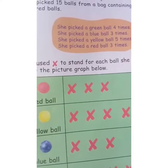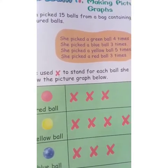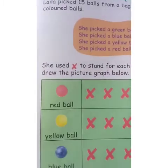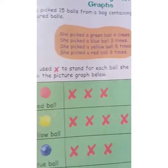First of all, you have been told to read a picture graph — you have columns with pictures and you know how much of something belongs to someone. But now you are going to learn to make your own picture graph. Look at page 229: Laila picked 15 balls from a bag in 4 different colours — red, yellow, blue, and green. She used a cross to stand for each ball and drew the picture graph.